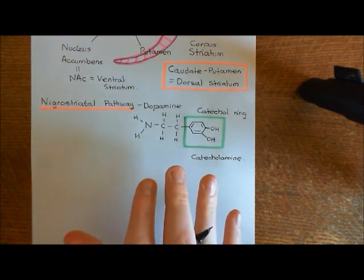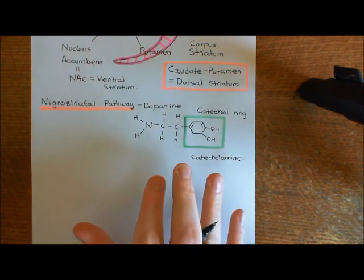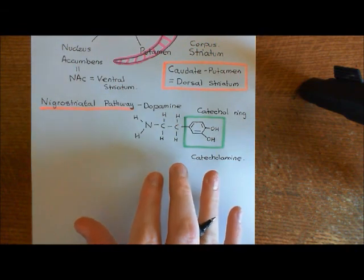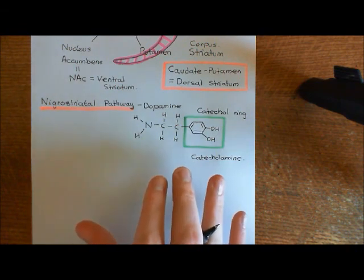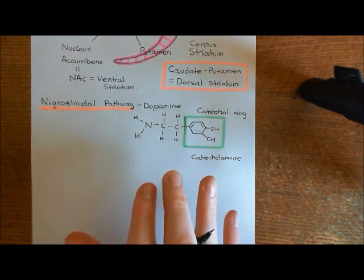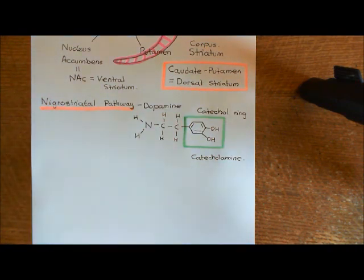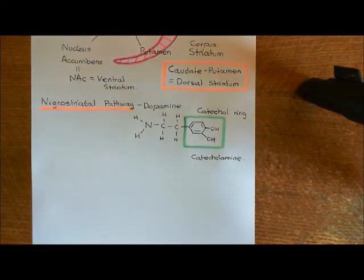Dopamine is a pretty rare neurotransmitter to be used within the brain. There are very few neurons in the brain which use dopamine as their neurotransmitter, and those neurons are generally all clustered together in certain nuclei. Two of these major nuclei are the left and right substantia nigra pars compacta.